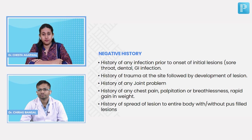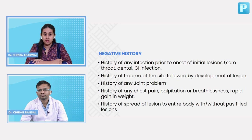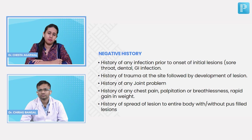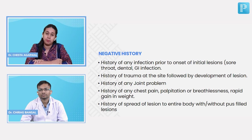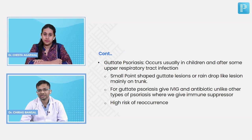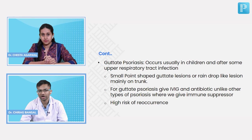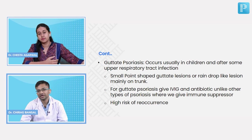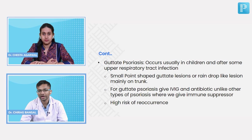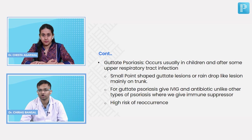Is past infection significant for psoriasis? Yes — there is a condition called guttate psoriasis, which occurs after upper respiratory tract infection, usually in children. If there is history of upper respiratory tract infection followed by appearance of silvery white lesions over extensors, we can think of guttate psoriasis.